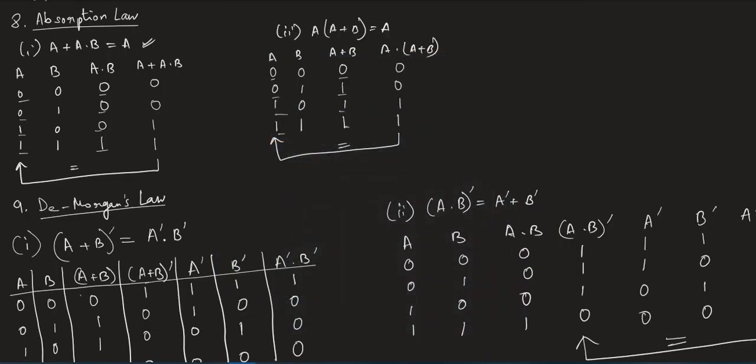In continuation of the previous video, absorption law. We can see that A plus A into B equals A. To verify this, we have two inputs A and B, so there will be four combinations. Under B we write 0, 1, 0, 1, and under A we write 0, 0, 1, 1. Now we multiply A into B: 0·0=0, 0·1=0, 1·0=0, and 1·1=1.